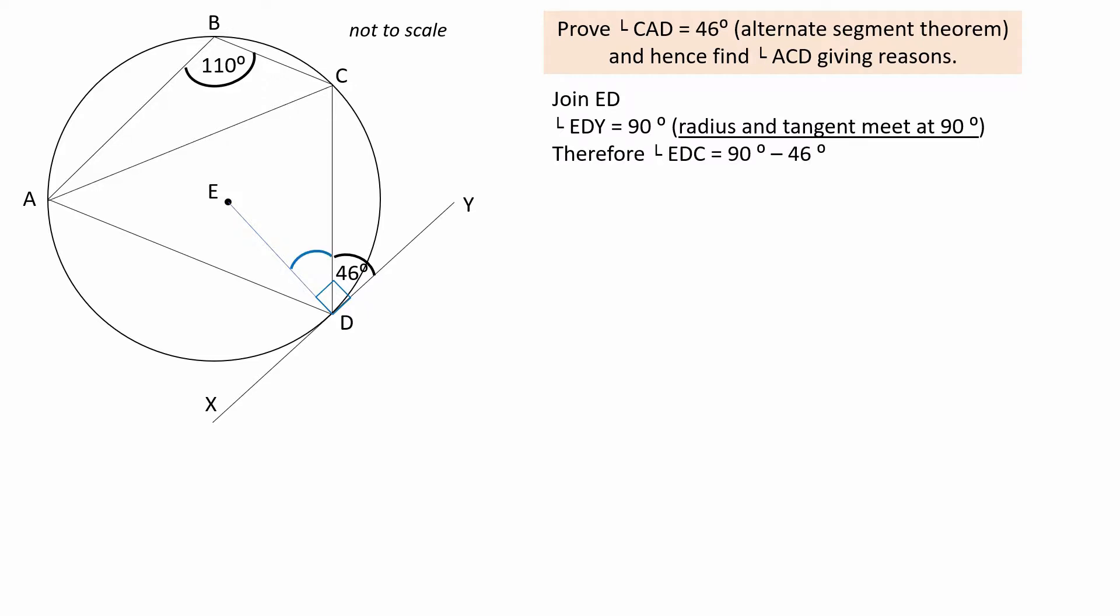Therefore, angle EDC can be calculated by subtracting the 46 degrees from 90 degrees, which is 44 degrees.